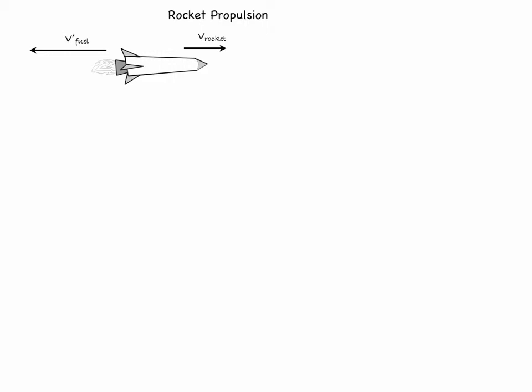Here V'_fuel is the relative speed with which the fuel is being ejected. We will need the absolute velocity of the fuel with which it moves with respect to a ground observer. So let us see how much it is.